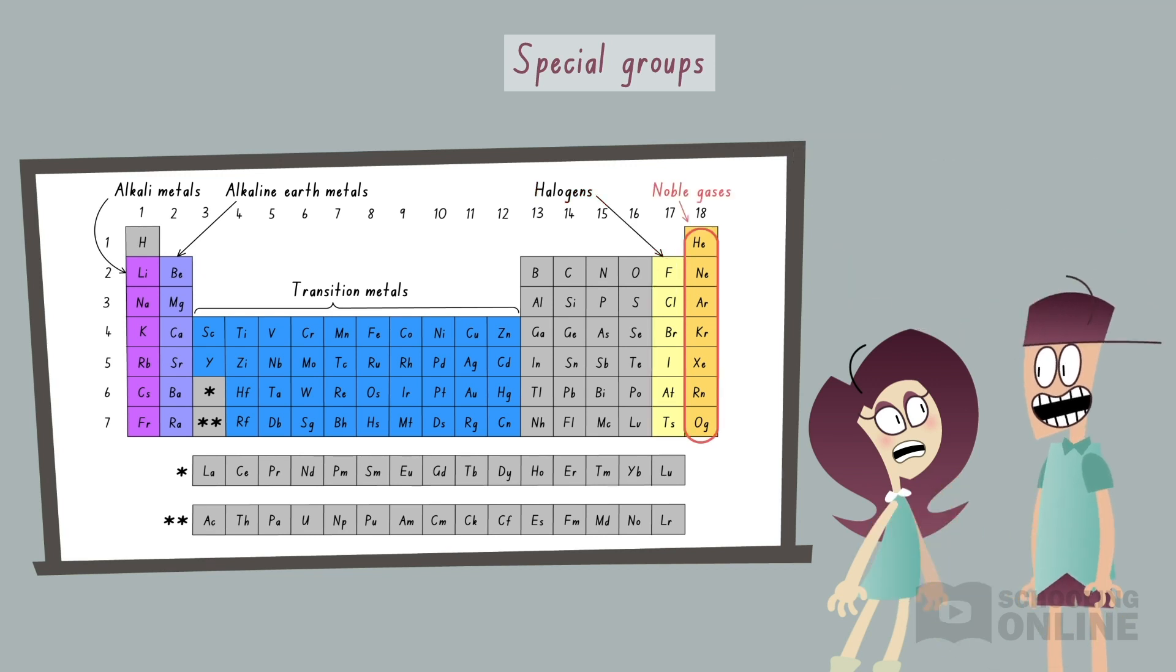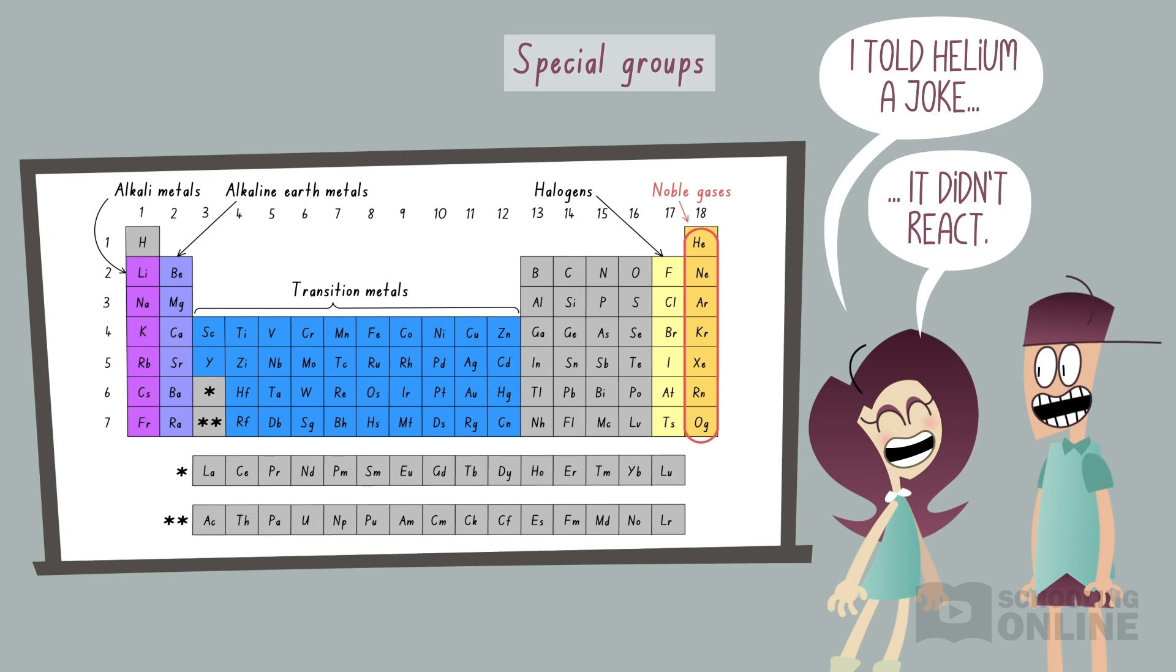Finally, the group 18 elements are noble gases. They have two or eight valence electrons, and do not form chemical bonds or react with other substances.